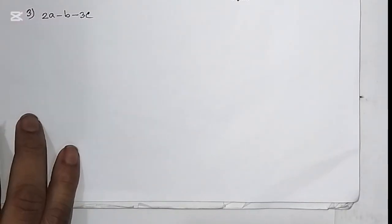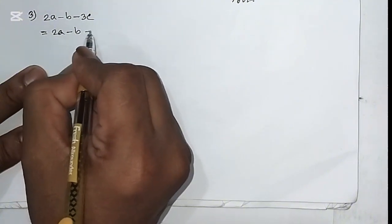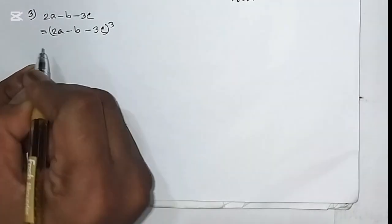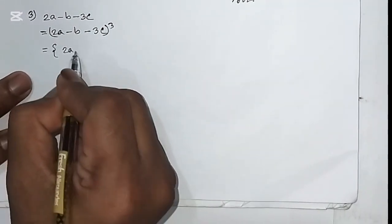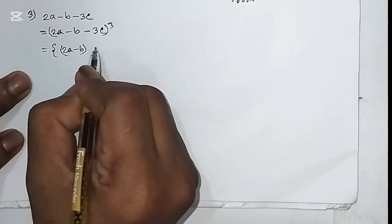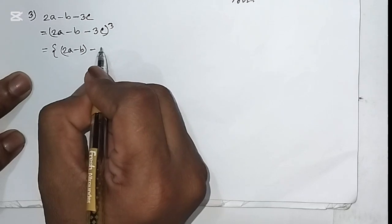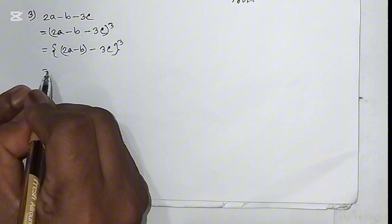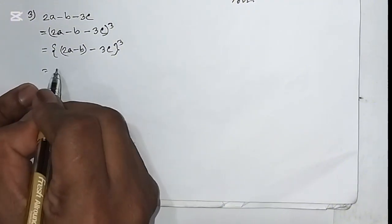Question number 3: (2a - b - 3c)³. Here (2a - b) is considered as 'a' and (-3c) is considered as 'b'. We apply the formula of (a - b)³.